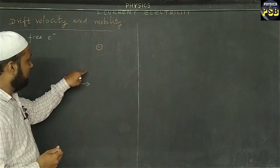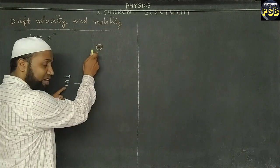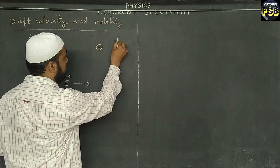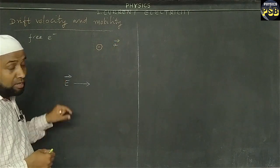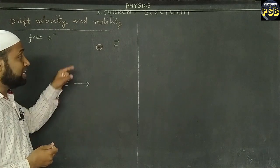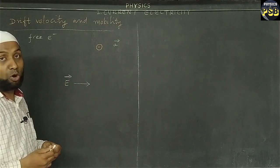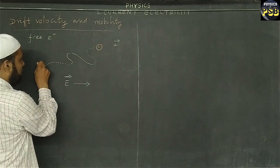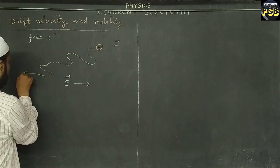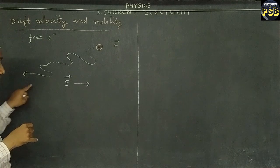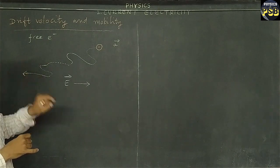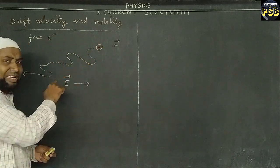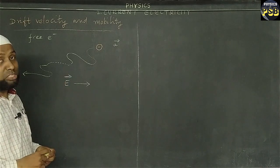in the opposite direction to that of the electric field. When they move, they collide with the positive ions present in the conductor. Here, electric field accelerates these free electrons - here is the acceleration - and the positive ions scatter these electrons.